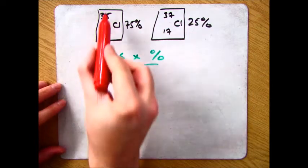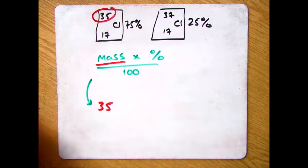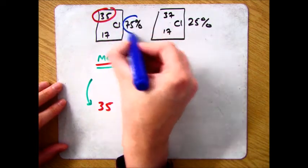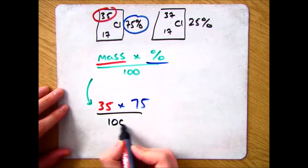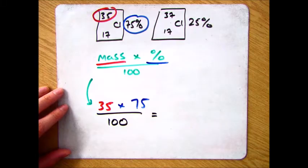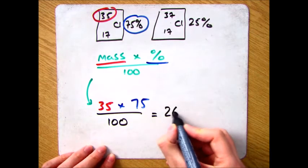So in this example where we have chlorine 35, what we want to do is take that 35 and multiply it by the percentage which in this case is 75, and then divide that by 100 which gives you 26.25.